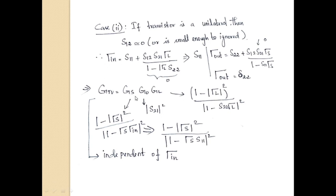Based on γIN = S11 and γOUT = S22, the overall unilateral transducer gain GTU = GS × G0 × GL. G0 = |S21|² as before. GL retains γL and S22. The source gain GS now becomes (1 − |γS|²) / |1 − γS·S11|², meaning the source side is now independent of the reflection coefficient from the network side. This independence is the biggest advantage of the unilateral model, giving maximum gain.